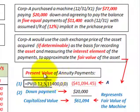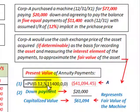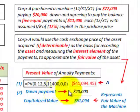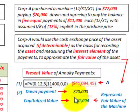For the present value of the annuity payments, we have twelve percent interest, five payments at the end of each year of eleven thousand four hundred dollars each. Using the present value annuity factor, the present value of those annuity payments comes to forty-one thousand ninety-four dollars. Adding the twenty thousand dollar down payment, we get the capitalized value of sixty-one thousand ninety-four dollars.